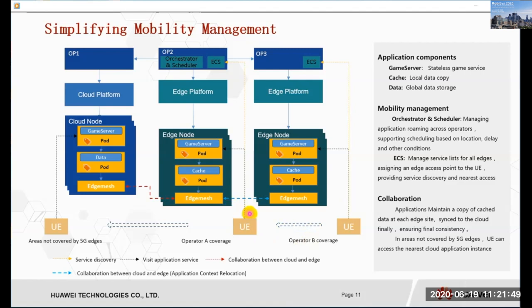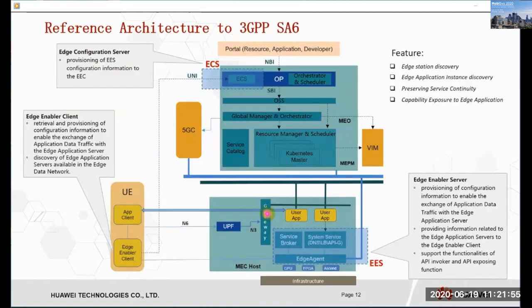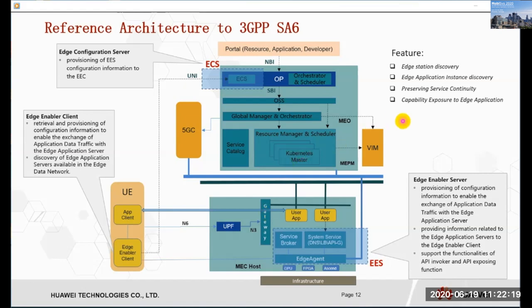If there is no application deployed on the best edge site, the system can deploy a new instance to serve the user if the scheduling policy permits. If there are no available 5G edge nodes for the current location, the UE can directly access the nearest cloud application instance. The mobility management involves the problem of collaboration. Applications maintain a copy of cached data at each edge, synced to the cloud, with collaboration between cloud and edge. When a user moves from one edge to another, the data shall also move through Edge Mesh to achieve data consistency. The data consistency mechanism needs further study. Some standardization organizations also have work in this area, and many criteria have been proposed.